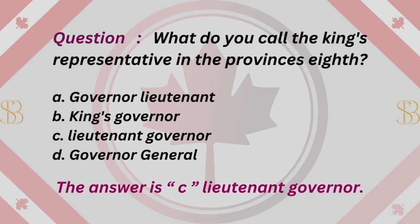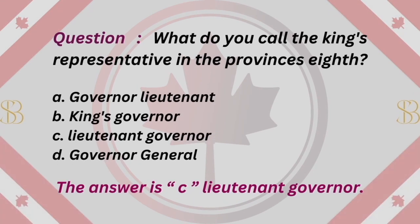Question: What do you call the King's representative in the provinces? A. Governor-Lieutenant. B. King's Governor. C. Lieutenant Governor. D. Governor General. The answer is C. Lieutenant Governor.